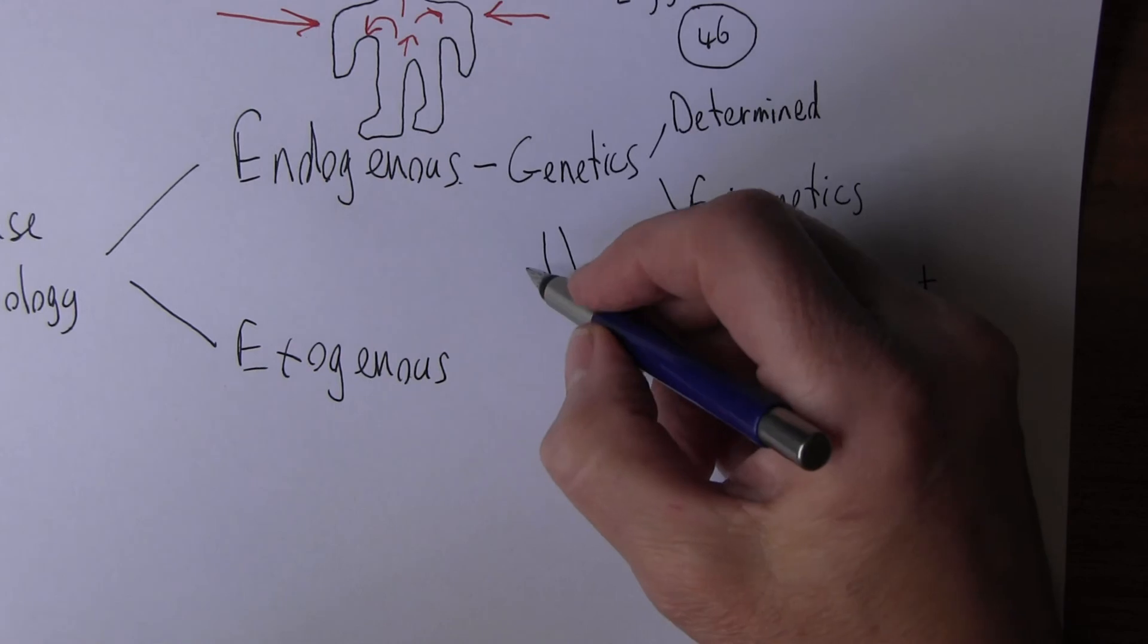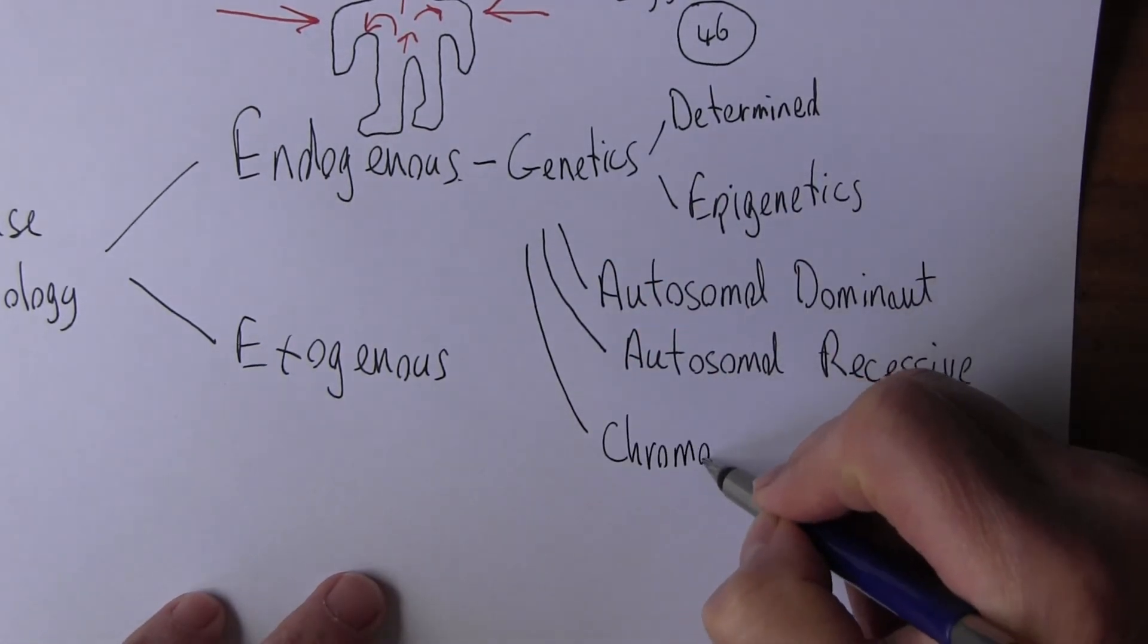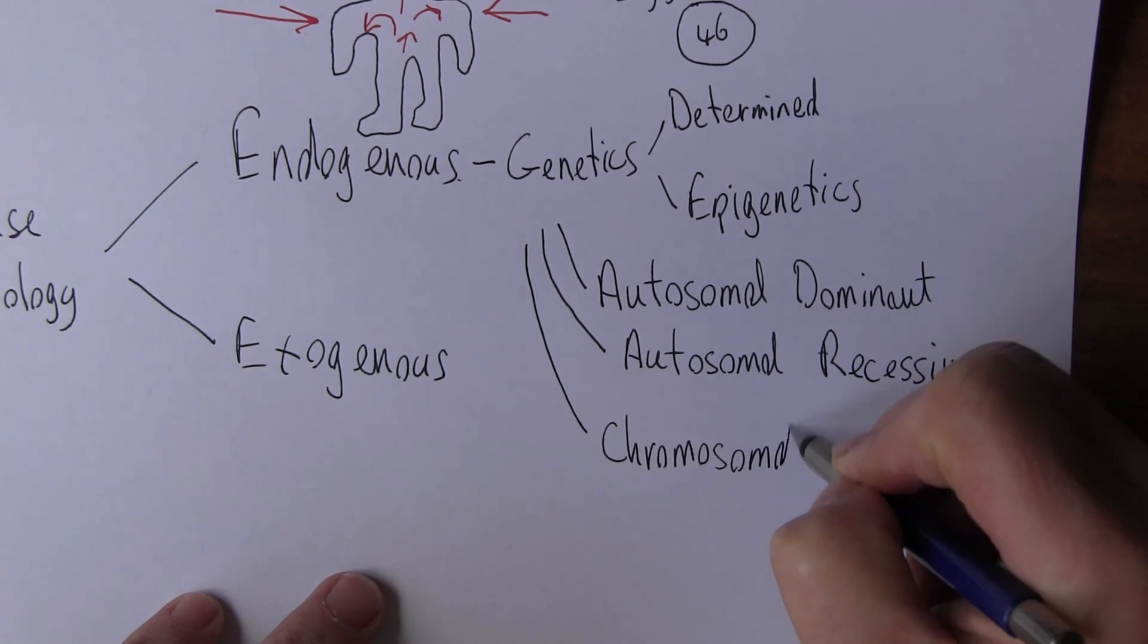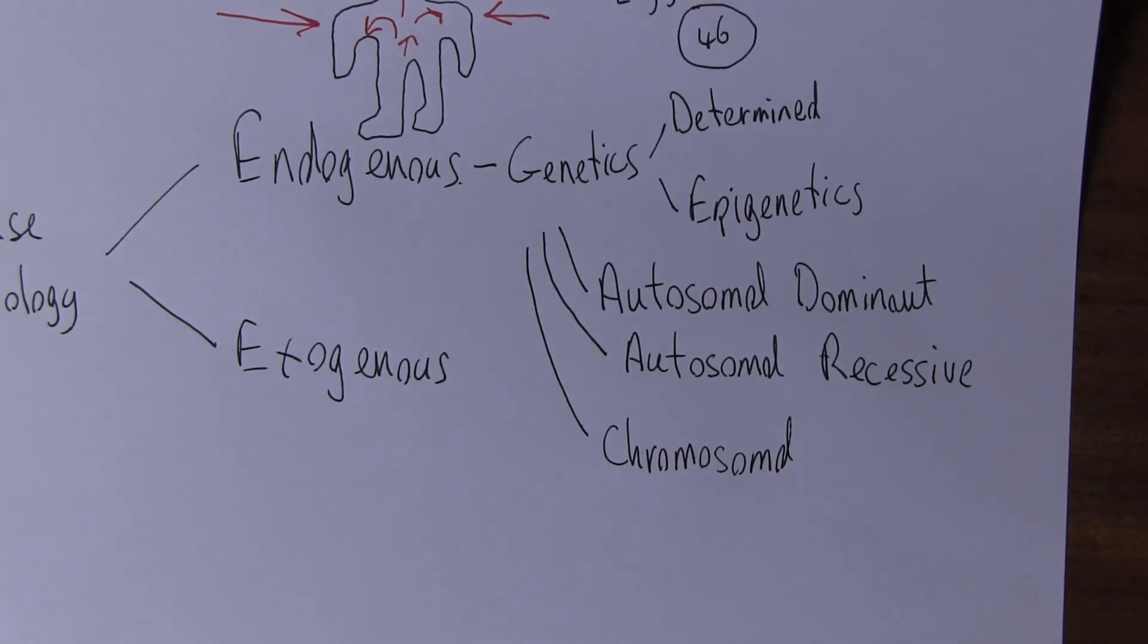Then we can talk about chromosomal disorders - disorders of chromosomes. Now these chromosomes are on a larger scale. For example, Down syndrome is caused by trisomy 21 syndrome, but there's a trisomy 18, there's a trisomy 13, there's different chromosomal disorders that can present.